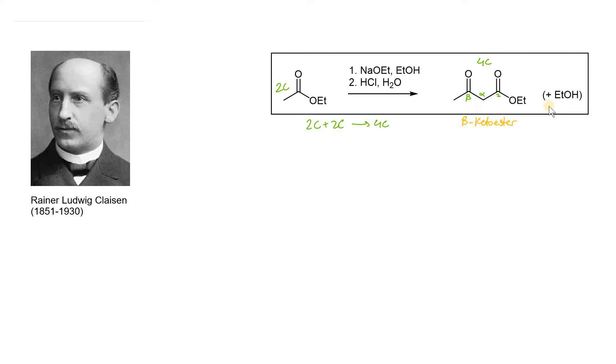Whereas in the aldol condensation, we had nucleophilic addition of enolates to carbonyls, in this case, the Claisen condensation is nucleophilic acyl substitution. The nucleophilic ester compound, the ester enolate, will nucleophilically attack another ester compound and drive off the leaving group. That's where we see ethanol here.